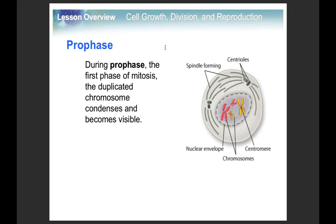When going over mitosis, think PMAT: Prophase, Metaphase, Anaphase, Telophase. In prophase, we're just getting ready — everything starts to form, the nuclear envelope starts to crack, like an egg being cracked. The chromosomes float around so they're easier to move. By this point your DNA is already condensed, so the chromosomes are actually visible.